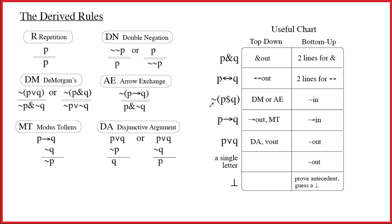Some of the top-down stuff is equally obvious. If you see an ampersand as the main connective, clearly you want to do ampersand out, and if it's a double arrow, you do double arrow out. The tilde is now almost as good as the ampersand and the double arrow, because if you see the tilde as the main connective, you know you're doing either De Morgan's or arrow exchange, depending on what you have on the inside — using the dollar sign as a wildcard. If it's a wedge, an ampersand, or an arrow, you have something immediately to do.